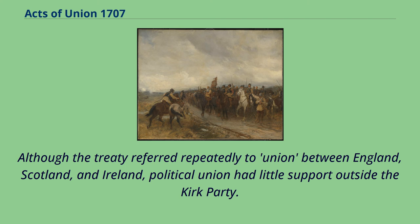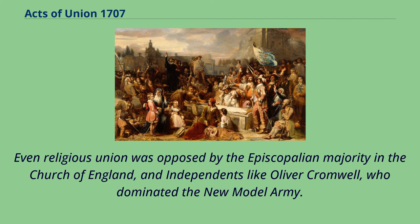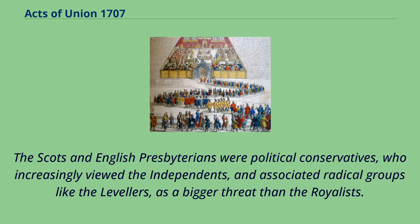Under the 1643 Solemn League and Covenant, the Covenanters agreed to provide military support for the English Parliament in return for religious union. Although the treaty referred repeatedly to union between England, Scotland, and Ireland, political union had little support outside the Kirk party. Even religious union was opposed by the Episcopalian majority in the Church of England and independents like Oliver Cromwell, who dominated the New Model Army. The Scots and English Presbyterians were political conservatives who increasingly viewed the independents and associated radical groups like the Levelers as a bigger threat than the Royalists.